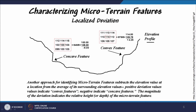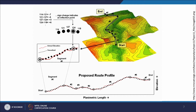To identify micro terrain features, subtract the elevation values at a location from the average of its surrounding elevation values. Positive deviation values indicate convex features, while negative values indicate concave features. The magnitude of the deviation indicates the relative height or depth of the micro terrain features. These are useful in route alignments and for finding rapids, undulations, or sudden changes in elevations along a drainage line.